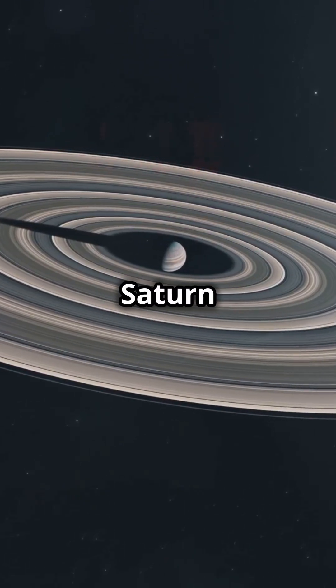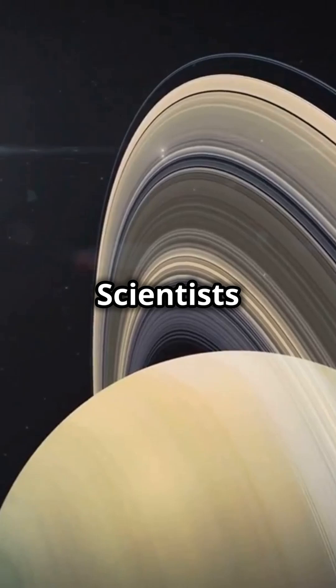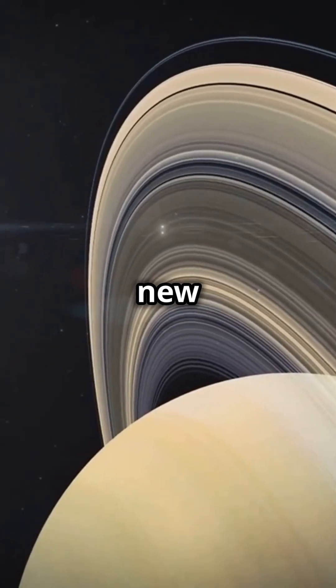If it replaced Saturn in our solar system, its rings would be visible from Earth, brighter than a full moon. Scientists think these rings might even be forming new moons right now.